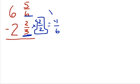5/6 minus 4/6 is 1/6. 6 minus 2 is 4. That's the easiest kind of problem.